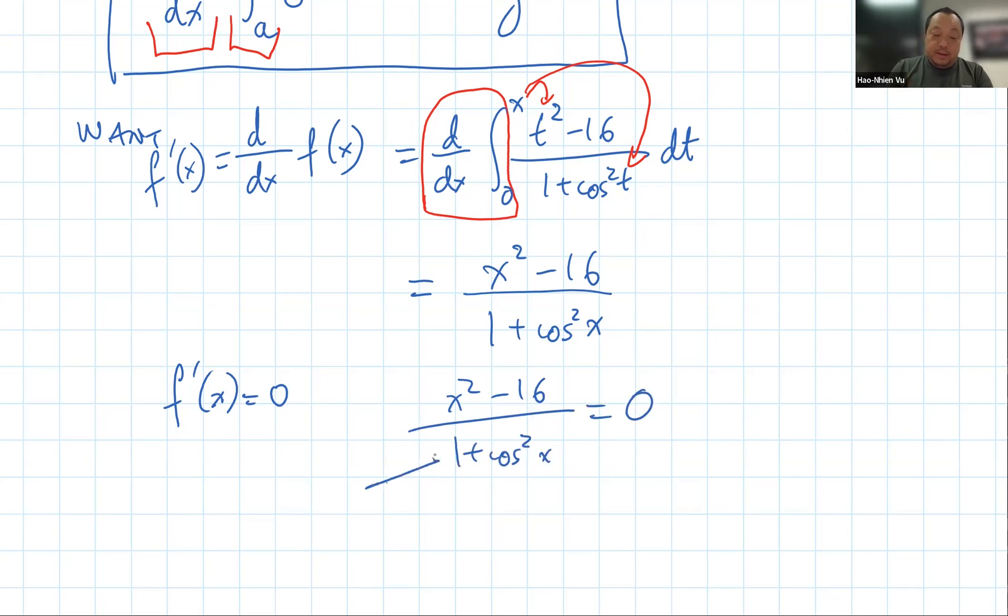First, we know that this denominator is always positive. Whatever cosine is, you square it. You get a non-negative number. You take a non-negative number, you add one to it. You get a number that's at least one. So it's not going to be negative. It's not going to be zero. You don't have to worry about the domain. So in order to solve this, all we need to solve is the x squared minus 16 equal to zero. And that means x is equal to plus or minus four. You have two answers.